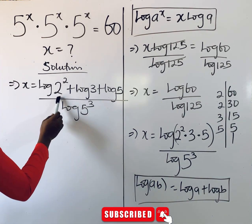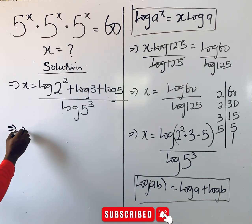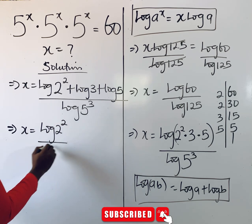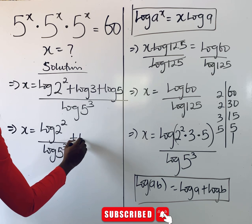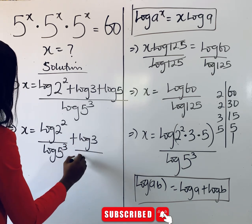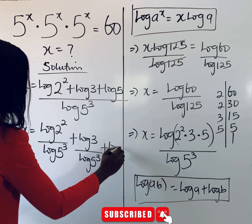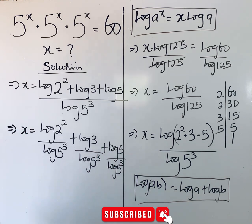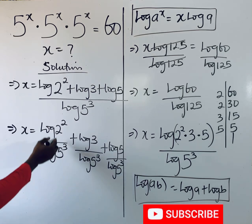This denominator divides each of the numerators, so we have x = log(2²)/log(5³) + log(3)/log(5³) + log(5)/log(5³). Now remember what we stated about the log power rule.